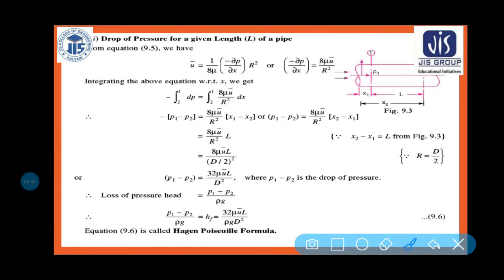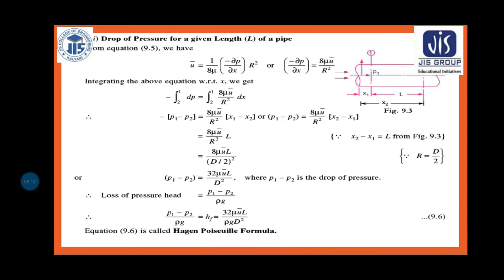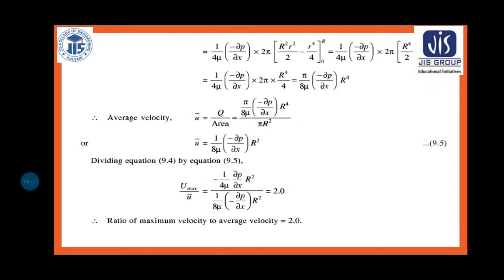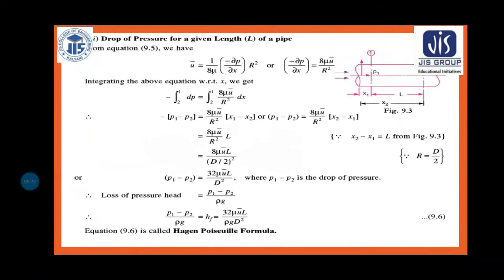Now, drop of pressure for a given length L of a pipe. We know u̅ is the average velocity. From the formula, we can write: dP/dx = -8μu̅/R², because we have to calculate how much pressure drops from position 1 to position 2.